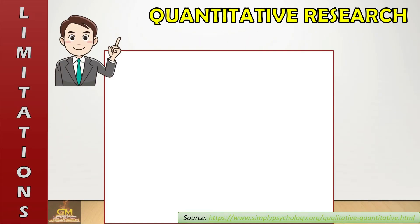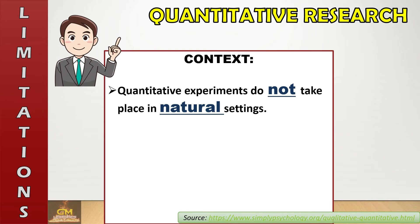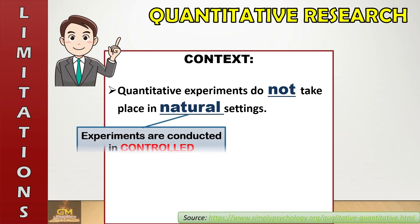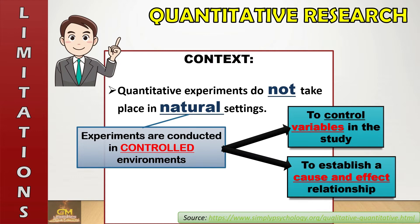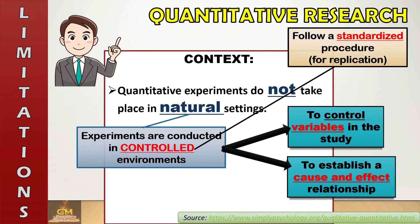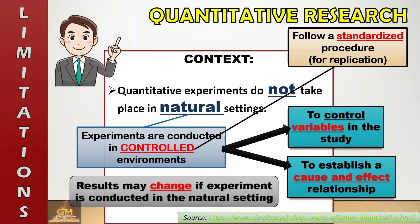We shall now proceed with discussing the limitations of quantitative research. One of the limitations is context, which means that quantitative experiments do not take place in natural settings. Experiments are conducted in controlled environments for two purposes: first, to control the variables in the study, and second, to establish a cause and effect relationship. Experiments follow a standardized procedure for purposes of replication. This is considered a limitation because results may change if the experiment is conducted in a natural setting.